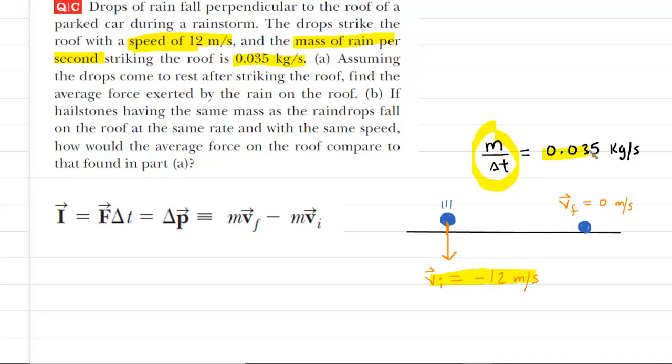And that is the given quantity right there. We are also told that these drops come to rest, which means that the final velocity of the raindrops is going to be 0 meters per second. And then it's also useful to write down what we're looking for. We are looking for the average force exerted by the rain on the roof.